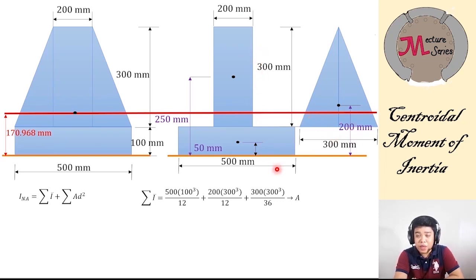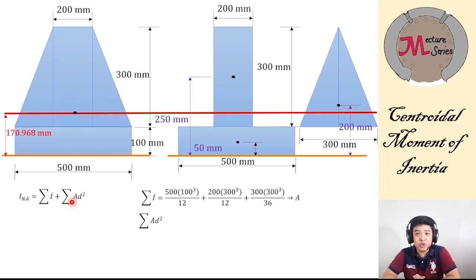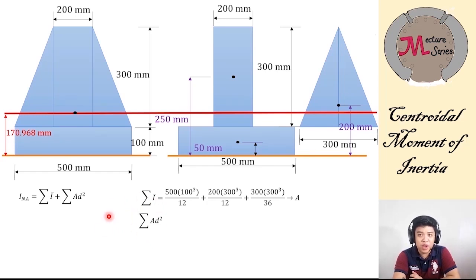The summation of AD² is very challenging because the distance in this term is the distance of the centroid of each figure from the neutral axis — very tedious. You have to plot it and then calculate it. For rectangle 1, the area is 500×100 multiplied by the square of the distance to the neutral axis, which is 120.968 mm. So we get 1144.65×10⁶ mm⁴. Press alpha A in the calculator and then add this value.